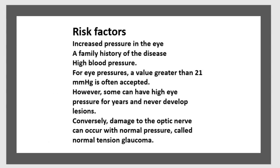Risk factors include increased intraocular pressure, a family history of the disease, and high blood pressure. A pressure value greater than 21 mmHg is often accepted as elevated. However, some people can have high pressure for years and never develop lesions. Conversely, damage to the optic nerve can occur with normal pressure — this is called normal tension glaucoma.